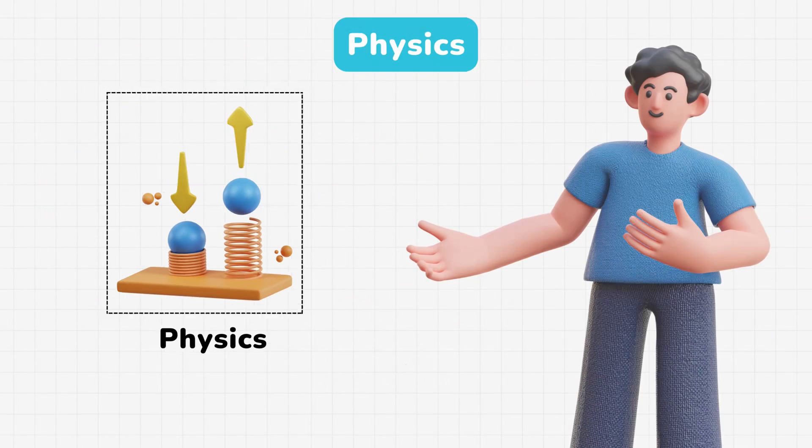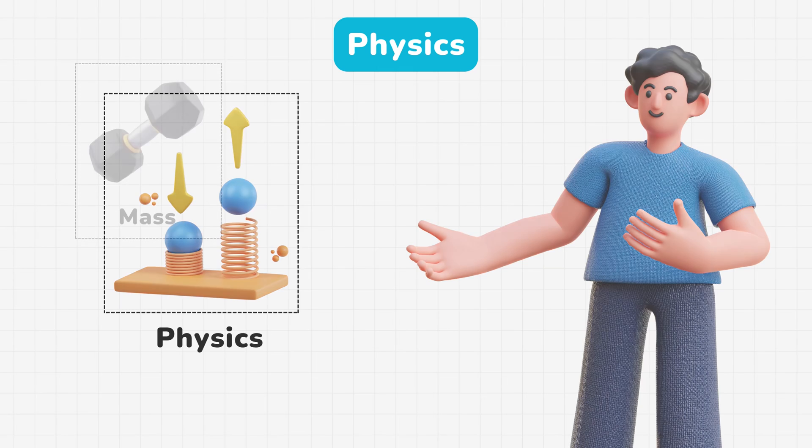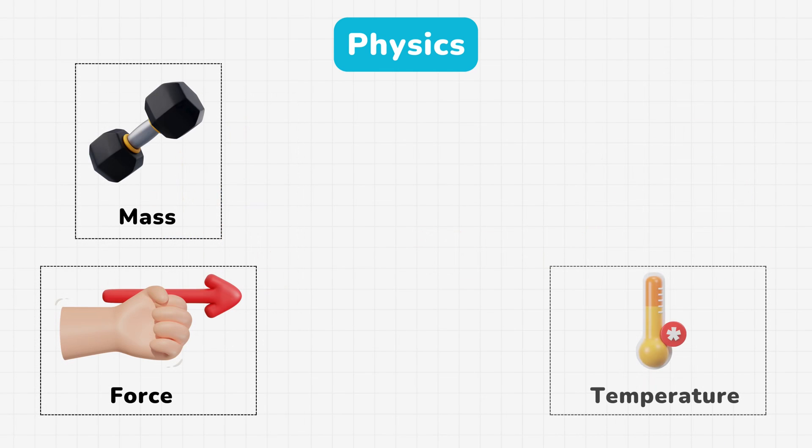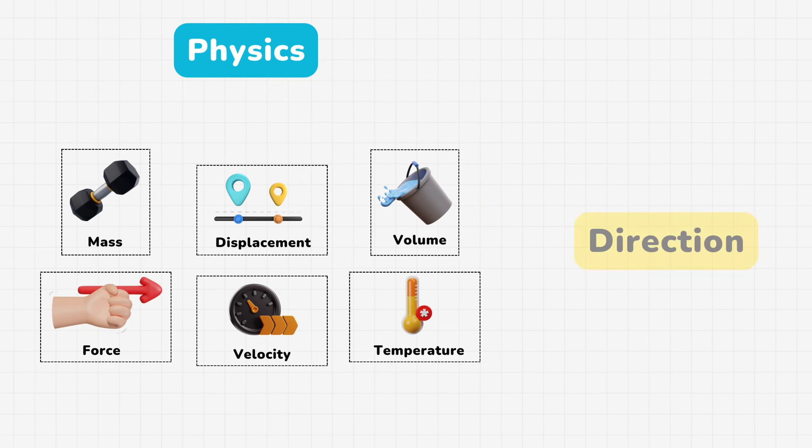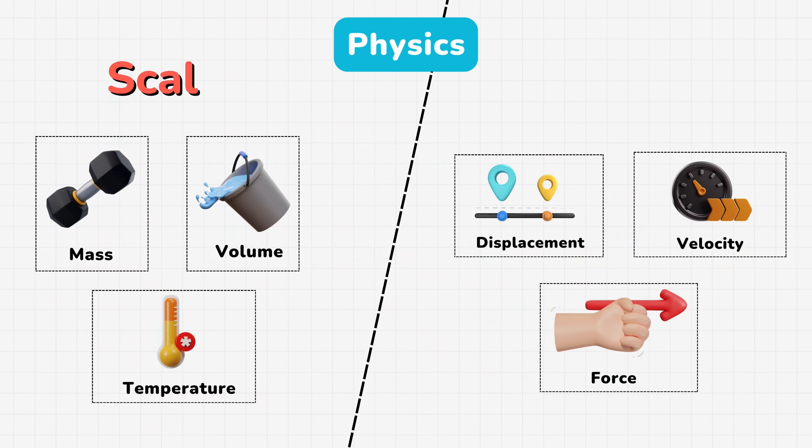Talking about physics, we deal with various quantities like mass, force, temperature, velocity, volume, displacement, and many more. The presence or absence of direction divides these quantities into two groups, namely scalars and vectors.